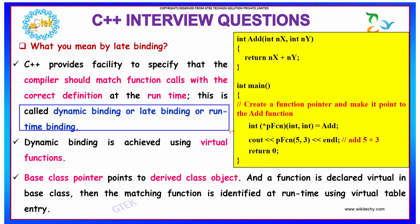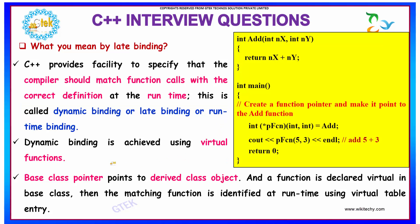That is, your binding is done during run time. Dynamic binding is achieved using virtual functions, where your base class pointer points to the derived class object.